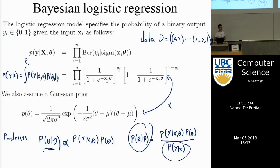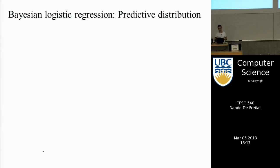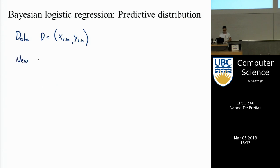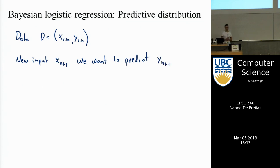Another integral of interest is the predictive distribution. We have training data D — all x_i, y_i pairs — and given a new point x_{n+1}, we want to predict y_{n+1}. The Bayesian way to make a prediction is to write down p(y_{n+1} | x_{n+1}, D) — what is the probability of y_{n+1} given all the evidence from the past and the new input? For a Bayesian, that function does not depend on parameters directly — you integrate out the effect of the parameters via marginalization.